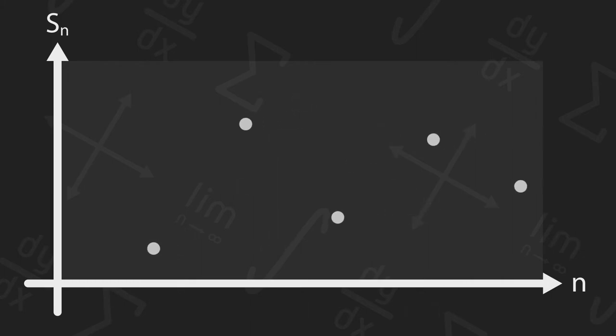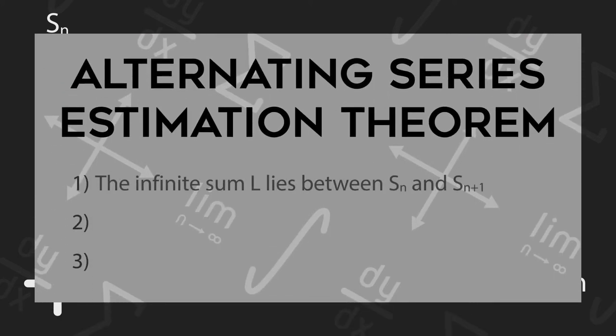If we extend these constraints to all terms to the right, where eventually our partial sum becomes the infinite sum L, it becomes clear that L must be lying between any partial sum you choose and the partial sum that comes right after. This statement constitutes the first part of the alternating series estimation theorem.